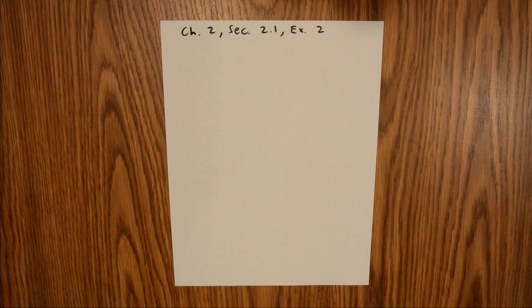Chapter 2 is all about the derivative. Section 2.1 is about how we measure speed. In Exercise 2, we are asked to find the average velocity of a particle given data for position and time.